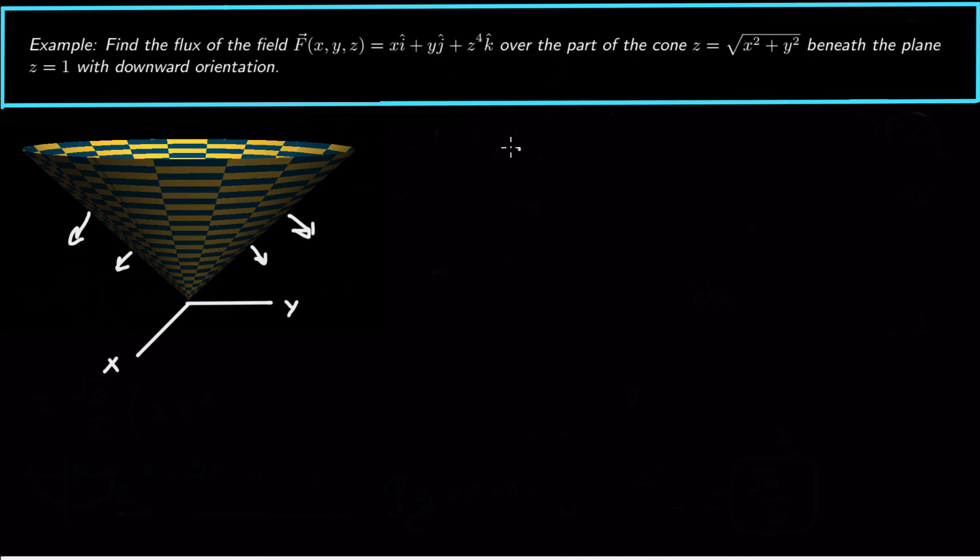The first thing we need to do is to try to parameterize this cone. It's a circular shape, so I suggest we do something like s of r comma theta, where we let x equal r cosine theta, y equal r sine theta, and then z equals square root of r squared, which is just r. This turns out to be a nice parameterization for this cone.